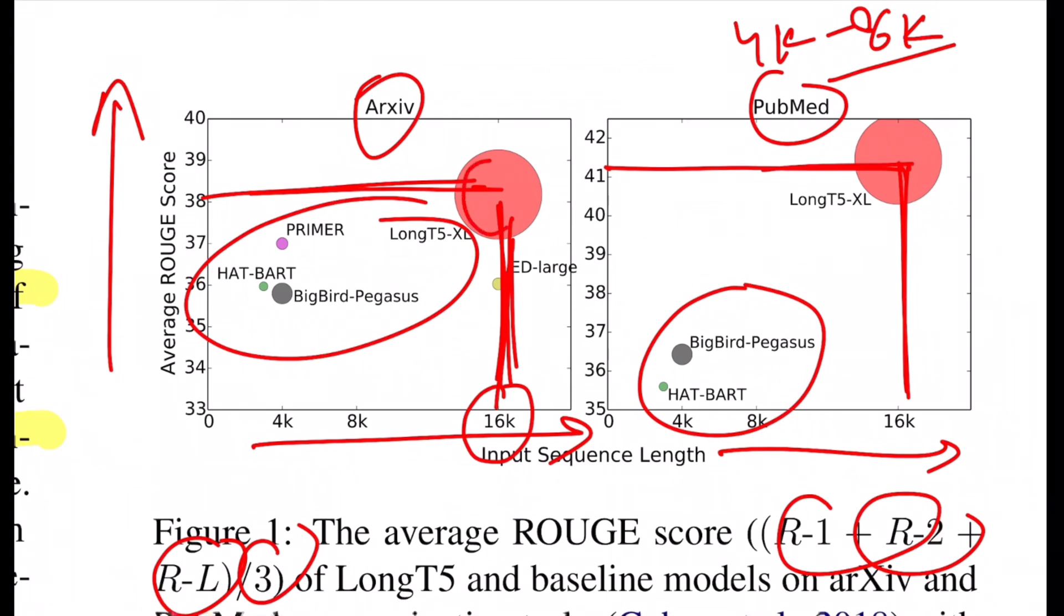And the radius of this bubble, what you see, defines the model parameters. So this is like 5x, 6x bigger than Big Bird, Pegasus and all of that. So clearly what they claim, which is you can go to longer sequences, which we see till 16k. And also if you increase the model size, which is defined by this radius of this bubble, we are able to get significantly better performance than existing systems. So yeah, that's pretty cool.